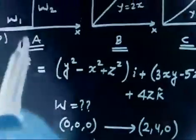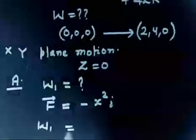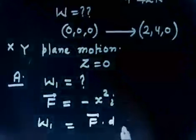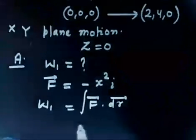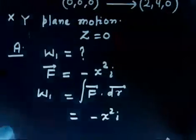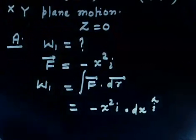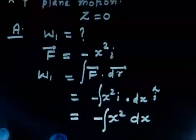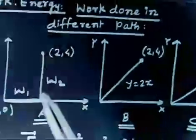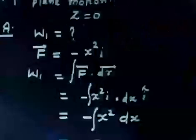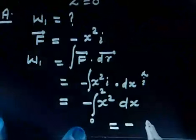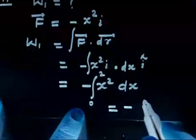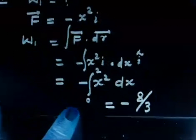Work done from here to here: W1 = ∫F·dr. F is given by -x² î and dr is simply dx î. So this gives ∫-x² dx. The initial x coordinate is 0 and the final x coordinate is 2, so this is integrated from 0 to 2. The result is -x³/3, giving -8/3. So W1 = -8/3.